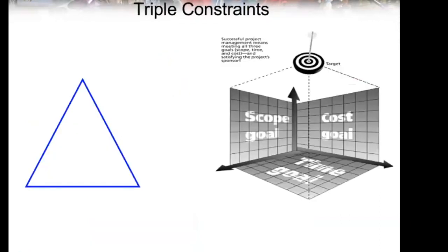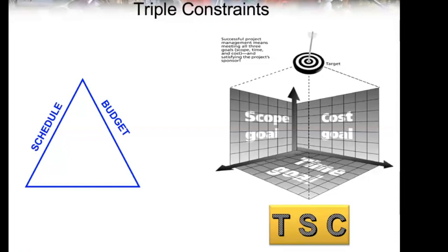What's the triple constraints? What was the acronym I used? TSC. I want you to remember TSC. TSC is my acronym: Time, Scope, Cost. For cost, we also call it budget. Some references will call it budget. Some will say schedule instead of time. Requirements, they say scope. So they are all the same things.